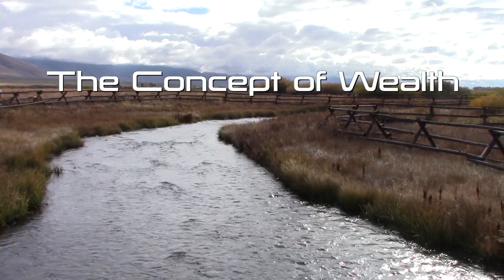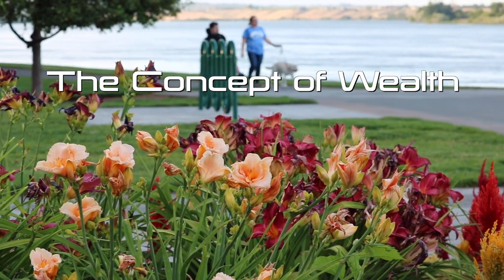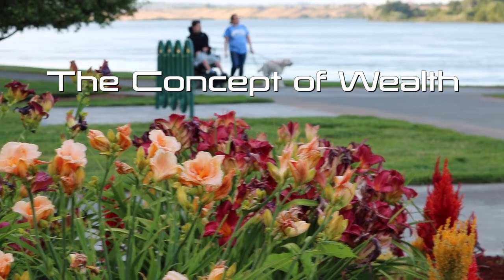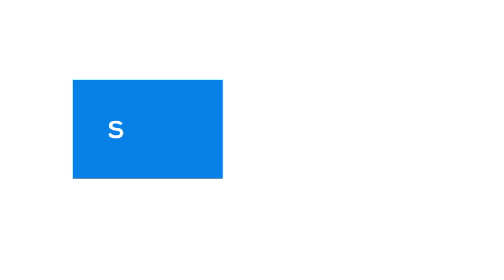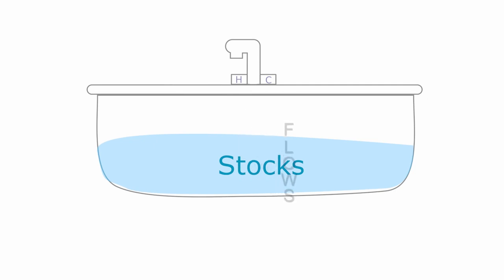To understand the concept of wealth, we need to be familiar with two fundamental concepts: stocks and flows. For example, if wealth was a bathtub, the stock represents the level of water in the bathtub, while flow corresponds to the amount of water flowing into the bathtub from the faucet and out of the bathtub through the drain.